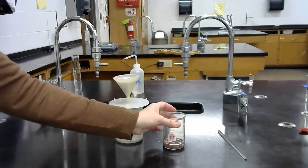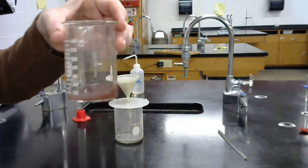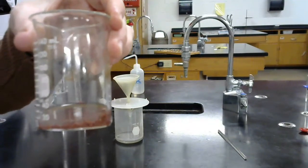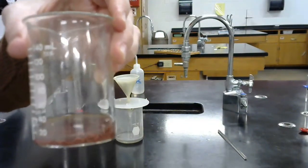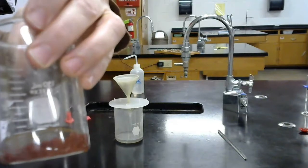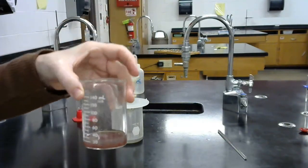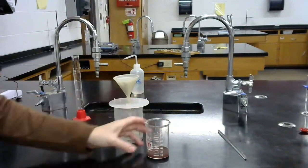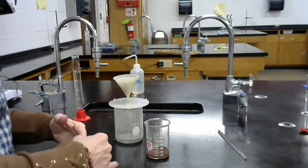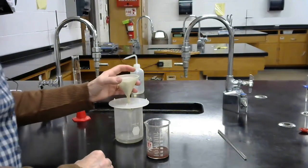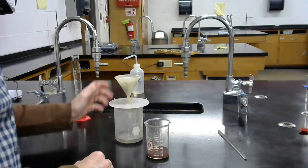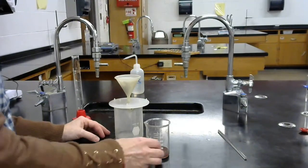And you can see in the beaker, there's my precipitate. So there's the precipitate that we're going to collect. So we'll collect that on the filter paper. Put the filter paper in the oven to dry it out so that there is no water in there, because we're not including water in the reaction.